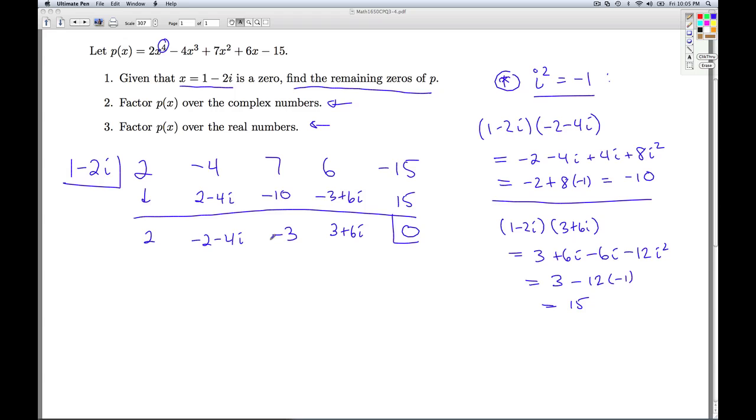So I go back to the complex conjugate theorem. Our polynomial has real number coefficients. In order for the polynomial to have real coefficients, if 1 - 2i is a zero, then its conjugate 1 + 2i must also be a zero. Non-real zeros of real polynomials come in conjugate pairs. So I should be able to divide 1 + 2i into my quotient polynomial and get a remainder of 0.